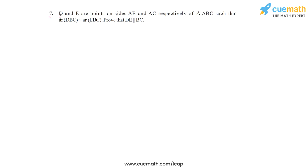Question 7 says that D and E are points on sides AB and AC respectively of triangle ABC such that area of triangle DBC is equal to the area of triangle EBC.